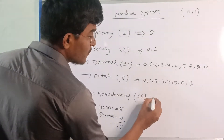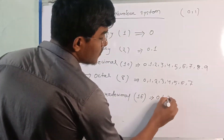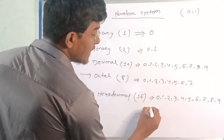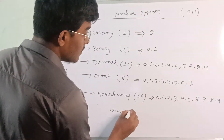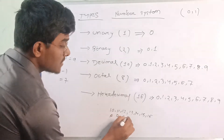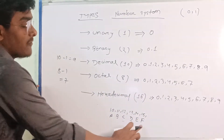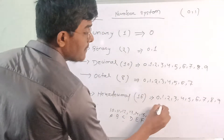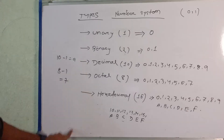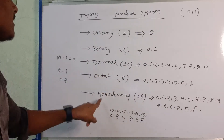Hexadecimal is important. First: 0, 1, 2, 3, 4, 5, 6, 7, 8, 9 — after that we consider 10 represented as A, 11 as B, 12 as C, 13 as D, 14 as E, 15 as F. So this is the total types of number system: unary, binary, decimal, octal, hexadecimal.